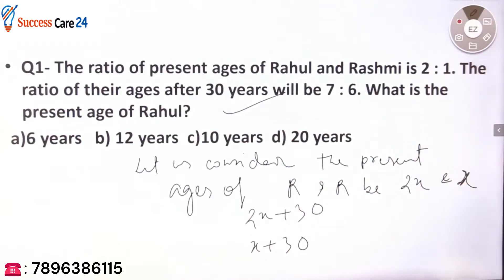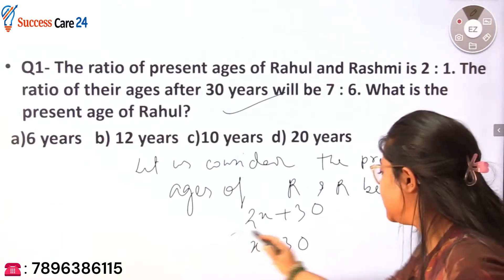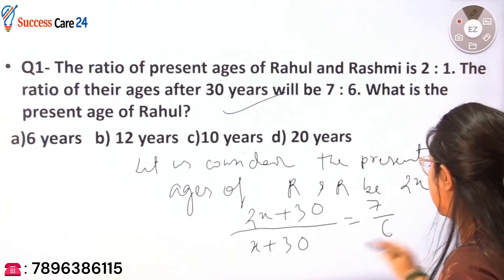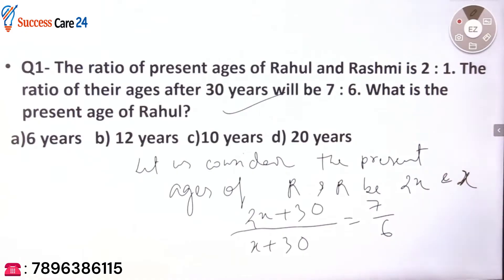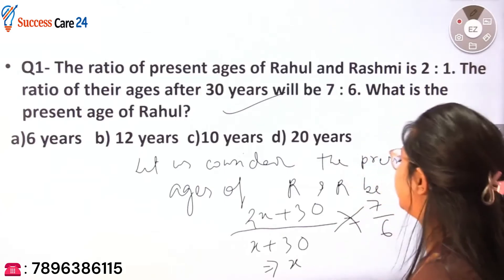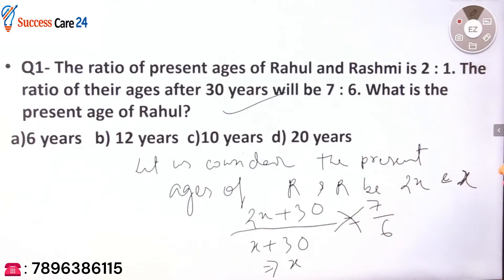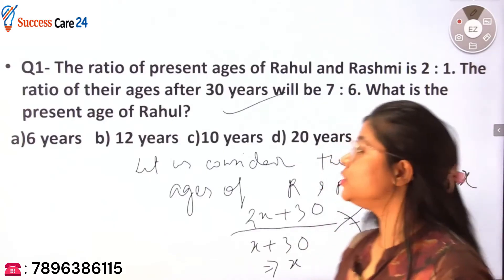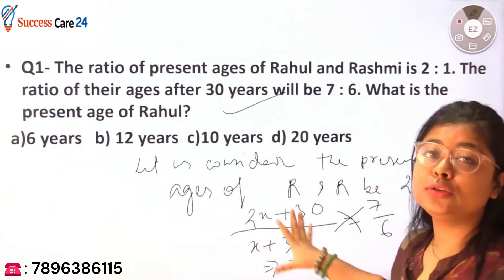You are given the ratio of their ages after 30 years is 7 is to 6, so you set up the equation (2x + 30)/(x + 30) = 7/6. You cross-multiply to find the value of x, and from there calculate the present ages of Rahul and Rashmi. This is the conventional method and it requires more than two minutes.